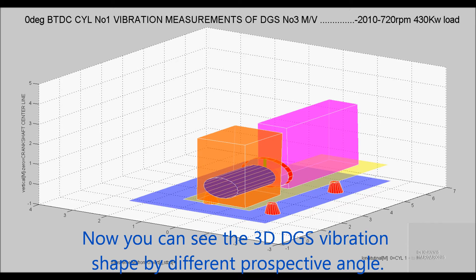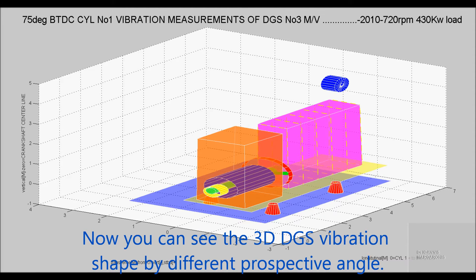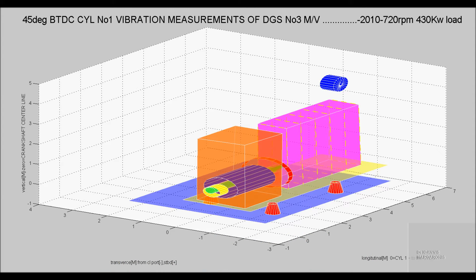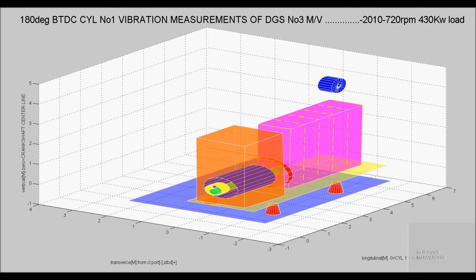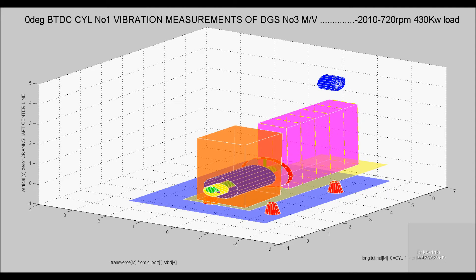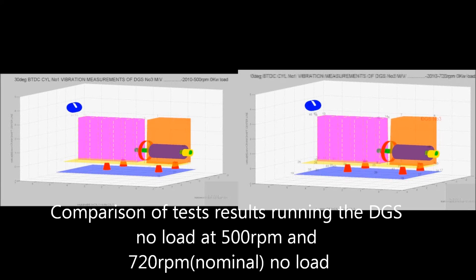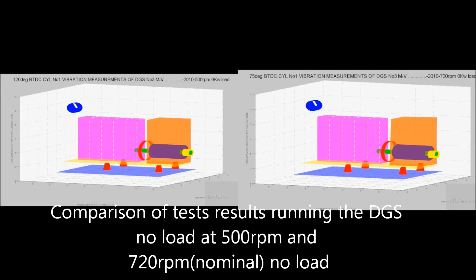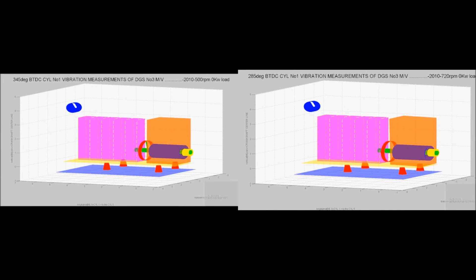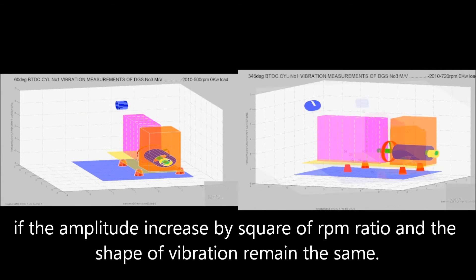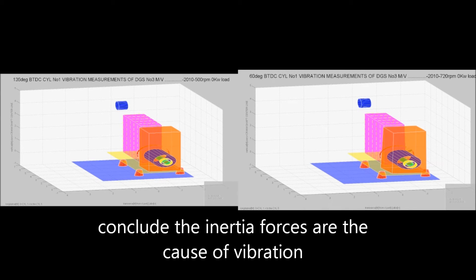You can now see the 3D DGS vibration shape from different perspective angles. Comparing test results running the DGS at no load at 500 RPM and 720 RPM nominal no load: if the amplitude increases by the square of the RPM ratio and the shape of vibration remains the same, we conclude that inertia forces are the cause of the vibration.